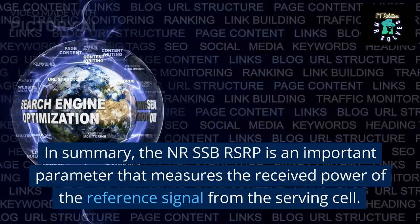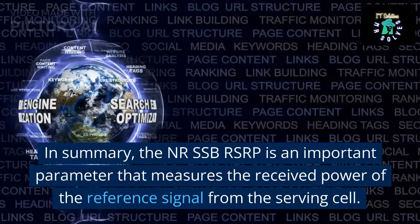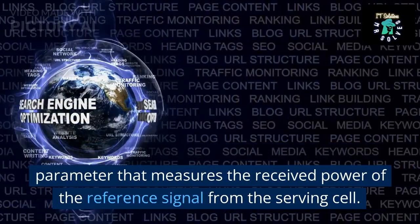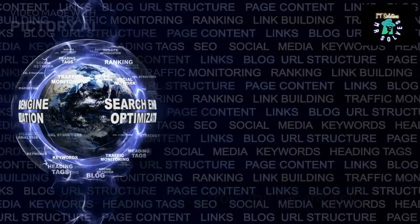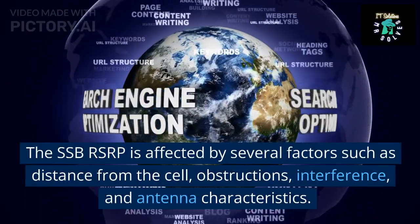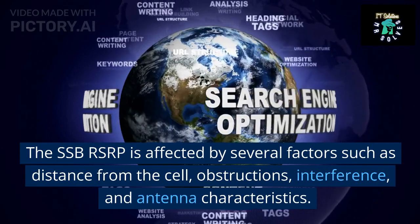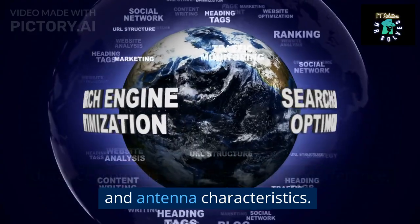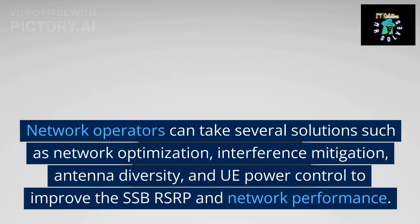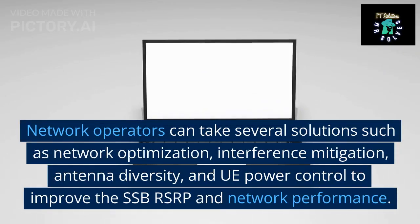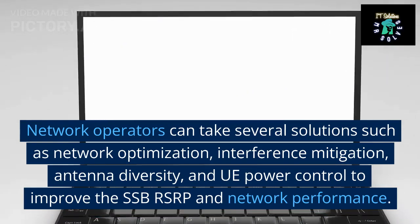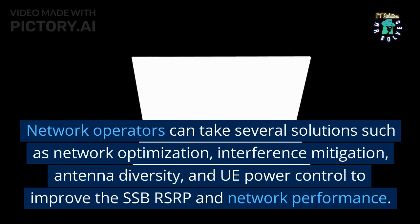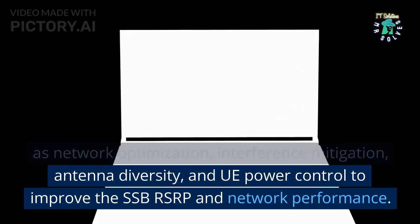In summary, the NR SSB-RSRP is an important parameter that measures the received power of the reference signal from the serving cell. The SSB-RSRP is affected by several factors such as distance from the cell, obstructions, interference, and antenna characteristics. Network operators can take several solutions such as network optimization, interference mitigation, antenna diversity, and UE power control to improve the SSB-RSRP and network performance.